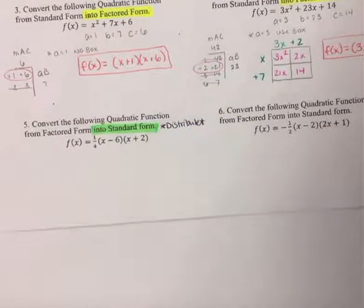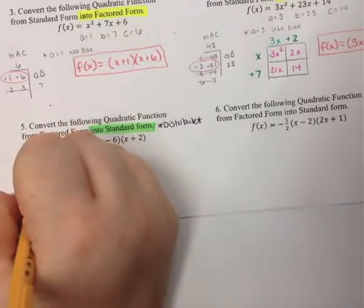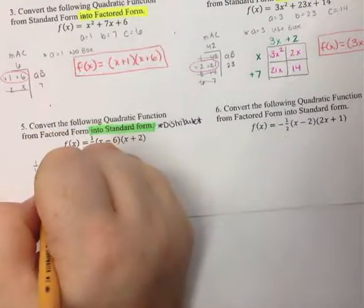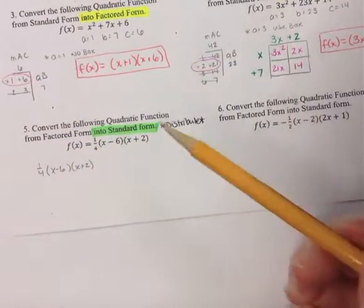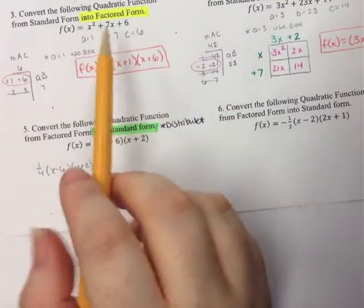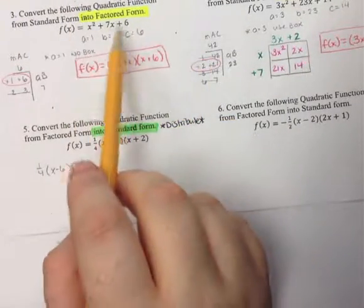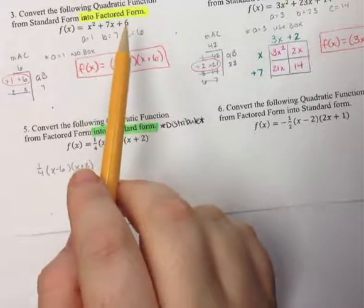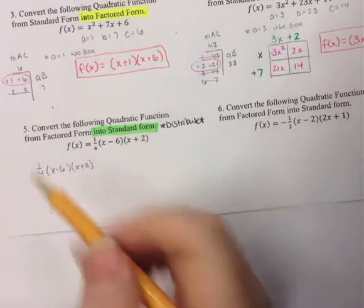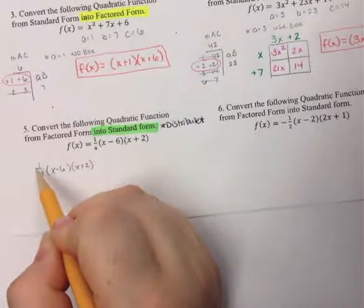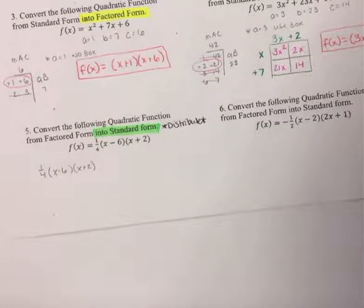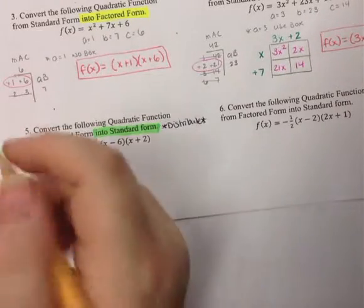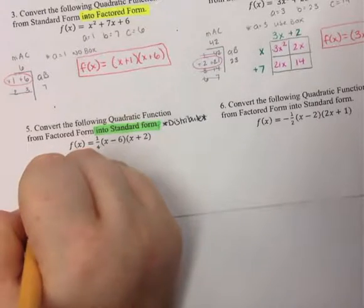We rewrite the problem as one-fourth times (x − 6)(x + 2). We're doing the exact opposite of factoring, so the first thing we did in factoring was GCF, meaning the GCF will be the last thing we distribute. The one-fourth was your GCF, so that'll be distributed last. We're going to get rid of the inner parentheses first — distributing the two binomials while keeping the one-fourth separate.